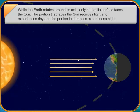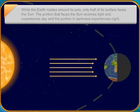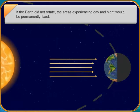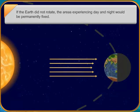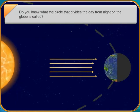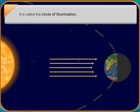As the Earth moves from the west to east, the dark half gradually faces the Sun. This movement produces dawn and dusk, the periods of diffused light between day and night. The part of the day just before the Sun rises in the east is called dawn. The part of the day when the Sun sets in the west and there is still some light is called dusk. Another word for dusk is twilight.